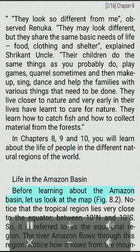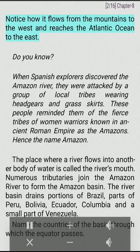Life in the Amazon Basin. Before learning about the Amazon Basin, let us look at the map. Notice that the tropical region lies very close to the equator, between 10 degrees north and 10 degrees south, so it is referred to as the equatorial region. The river Amazon flows through this region. Notice how it flows from the mountains to the west and reaches the Atlantic Ocean to the east.